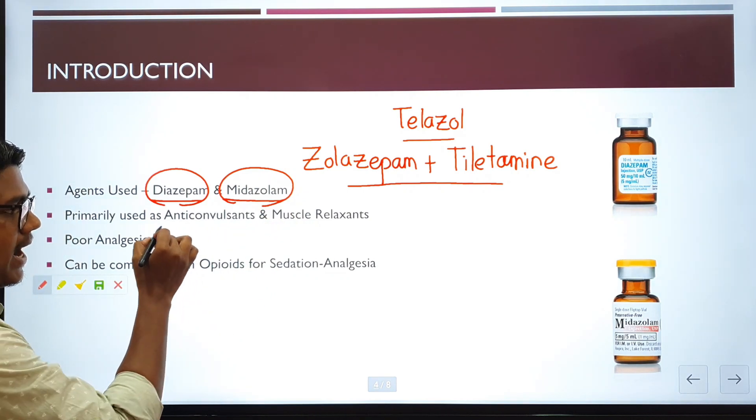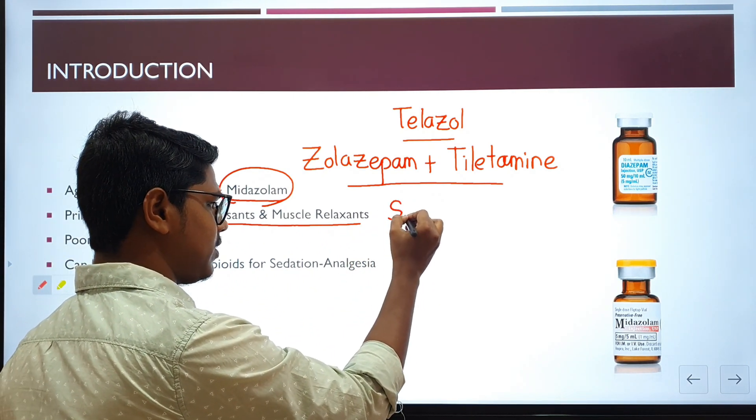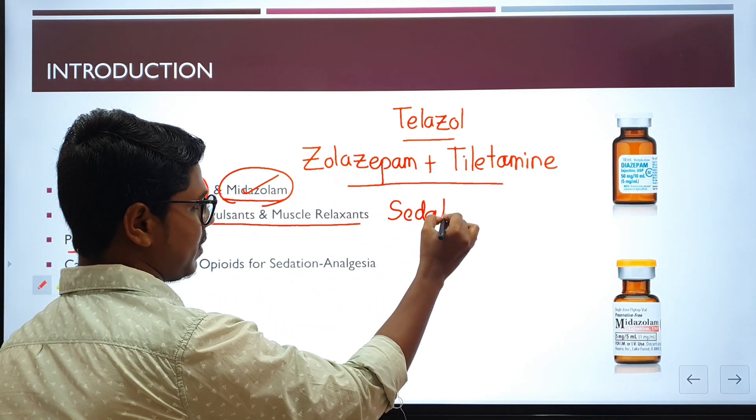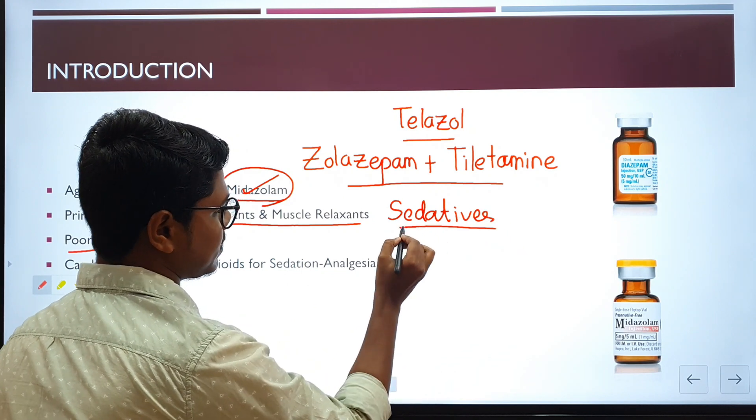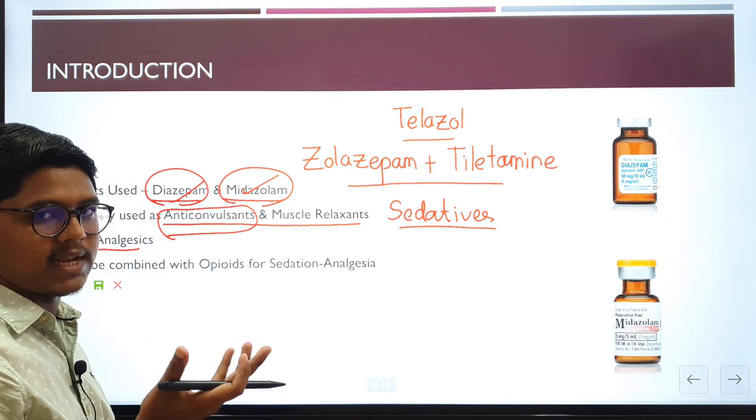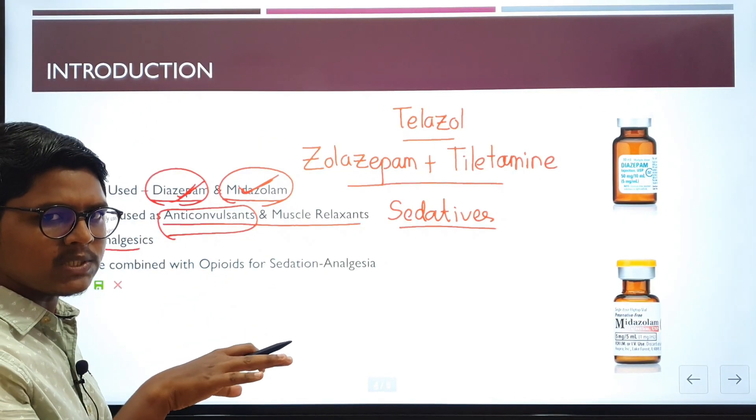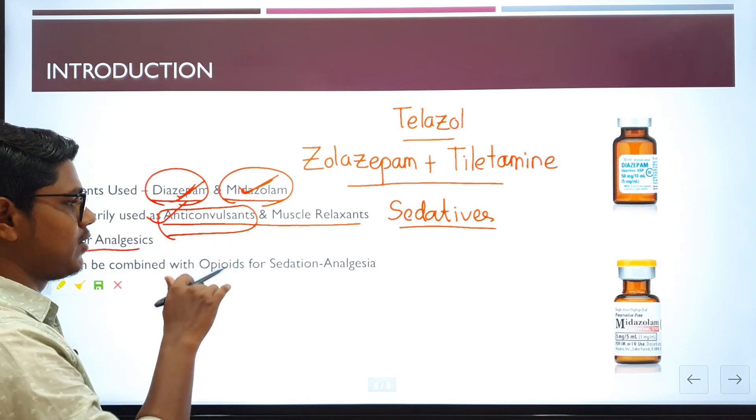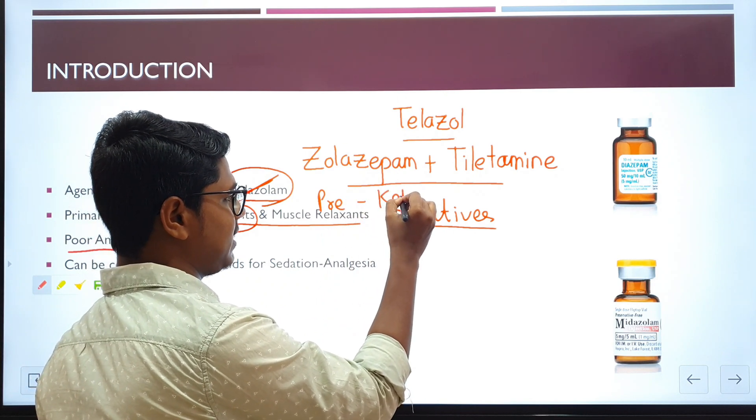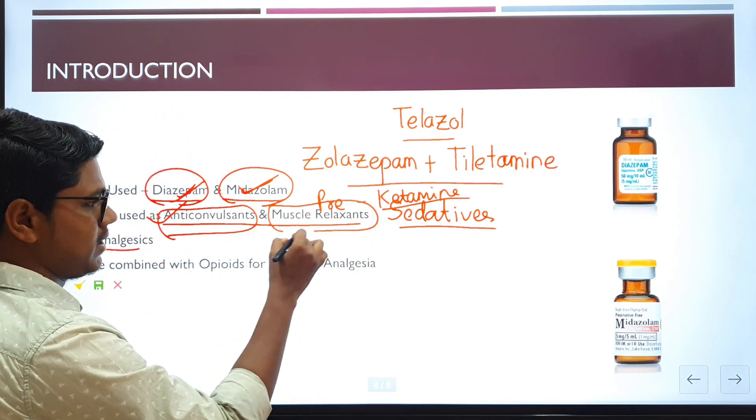They are basically used for anticonvulsants and muscle relaxants. They are sedatives. I will talk about when I go to the individual anesthetics, diazepam and midazolam. I will tell you in which species they act as sedatives. But they are primarily used as anticonvulsants. If you have watched series like Good Doctor or Grey's Anatomy, you have seen the use of diazepam, midazolam, or lorazepam for convulsions or seizures. They are very good anticonvulsants. When they are pre-administered before ketamine, they negate the seizure effect of ketamine and produce very good muscle relaxation.